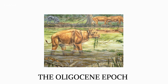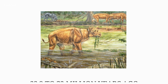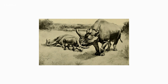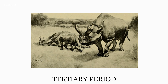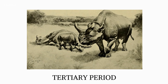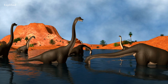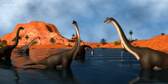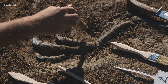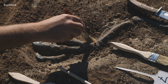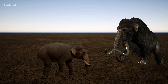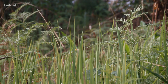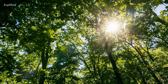The Oligocene epoch spanned from 33.9 to 23 million years ago, precisely in the middle of the Tertiary period and towards the end of the Paleogene. Despite being just 11 million years long, it saw a number of significant changes, including the development of the first elephants with trunks, early horses, and various grasses and plants.